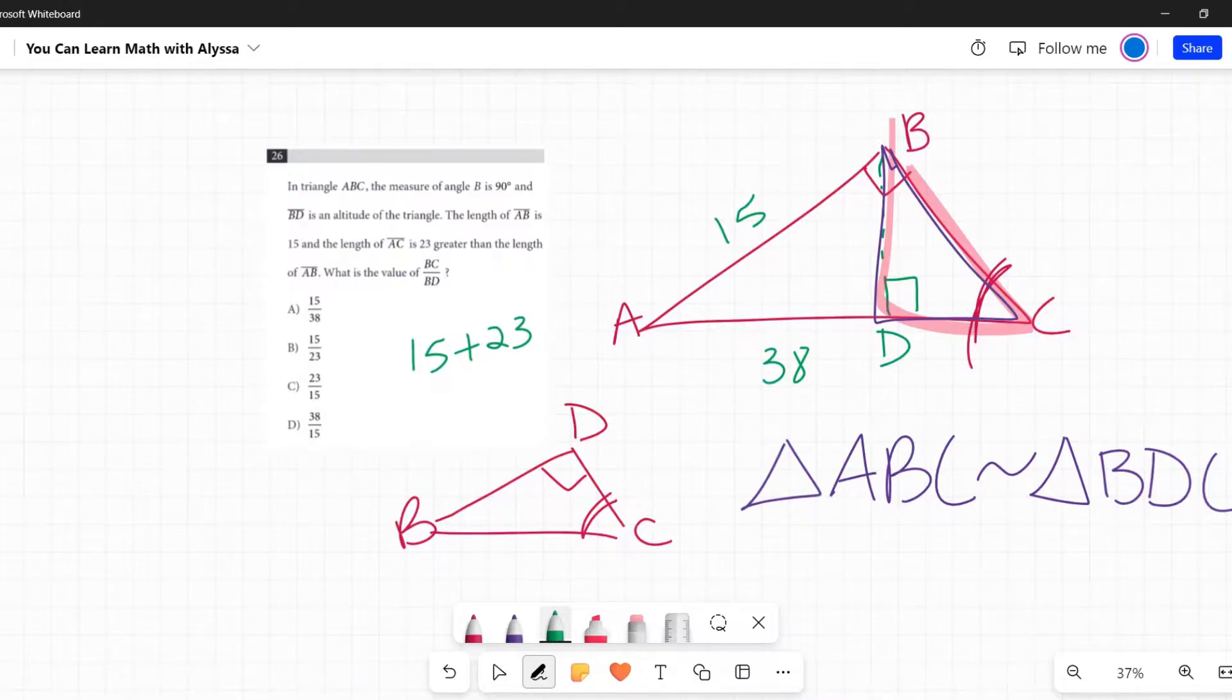The length of AB, A is to B, is 15, and the length of AC, A is to C, is 23 greater, or 38. They're saying A to B is 15. Let's look what ratio they're asking, and then we can set this up really easily.